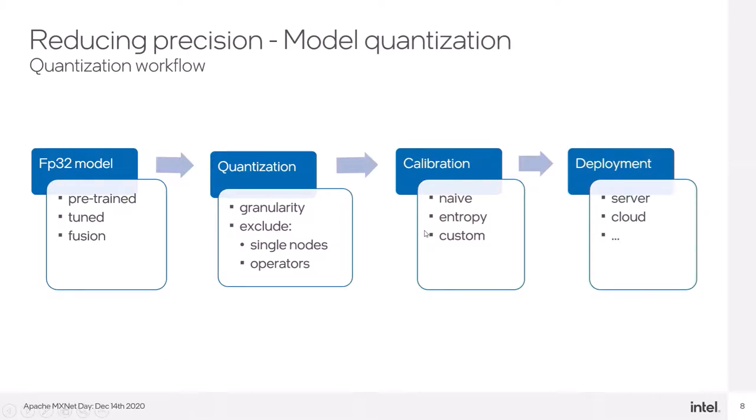Next step is model calibration. It is optional, but important in terms of performance. This is the process where we collect node statistics on real data to find the best thresholds for scales, for requantize operators. Otherwise, these nodes will calculate scales online during each inference path.